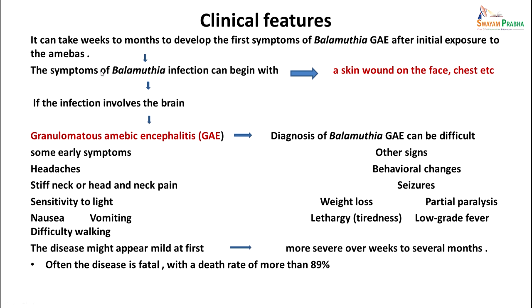As far as clinical features are concerned, it can take weeks to months to develop the first symptoms after exposure. Infection can begin with a skin wound on the face or chest, and later if the brain is involved, the patient presents with amoebic meningoencephalitis. Early stage symptoms include headache, stiff neck, sensitivity to light, nausea, vomiting, difficulty walking, behavioral changes, weight loss, partial paralysis, tiredness, and low-grade fever. The disease is fatal, and death occurs in more than 89 percent of cases.